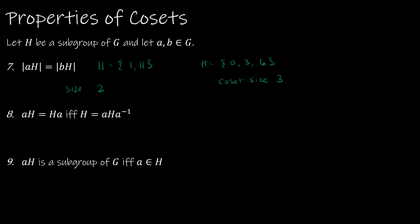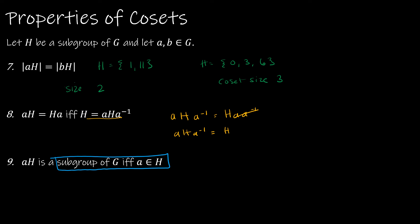Property 8: AH equals HA if and only if AHA inverse equals H. You can verify this by multiplying both sides on the right by A inverse. Property 9: AH is a subgroup of G if and only if A is an element of H. The only time a coset is itself a subgroup is when A is already in the subgroup — for example, {1, 11} with A in H gives a subgroup.